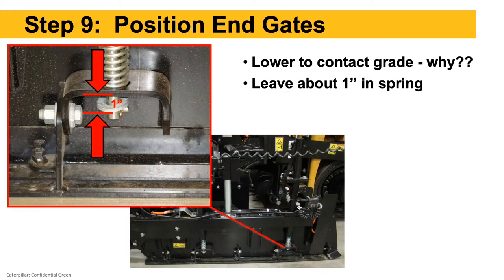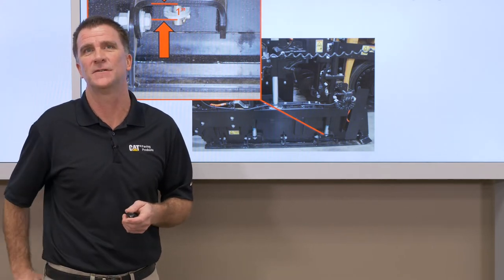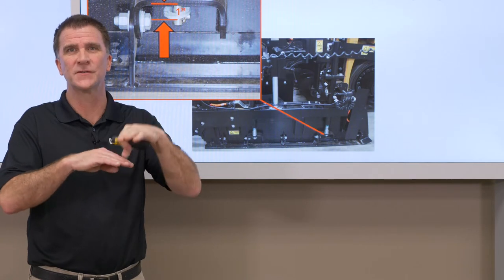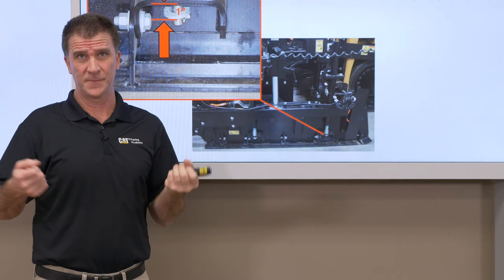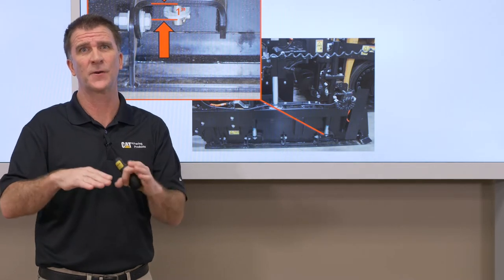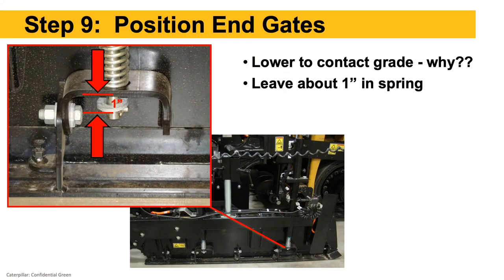After nulling, turn the depth crank just to tension — don't put any cranks into it, just until we start to feel tension — then lock those depth screws. Step 9: position our end gates. Lower them down to contact the grade, whether paving a new mat, an unconfined edge, or joint matching. We want to see about one inch of spring — springs typically have about four inches of play. Turn those end gates down until we have about one inch, which allows the end gate to follow the grade and give us a nice square edge or square longitudinal joint. A square edge gives much better joint density when we compact.